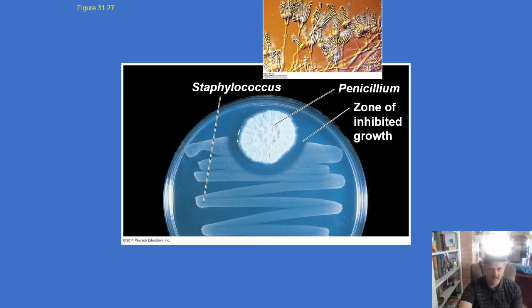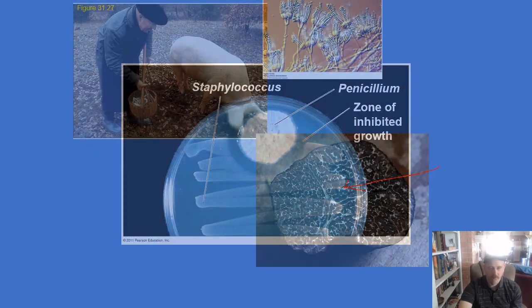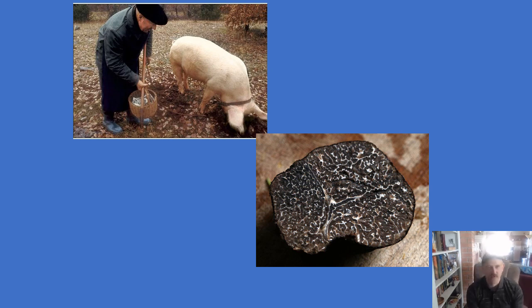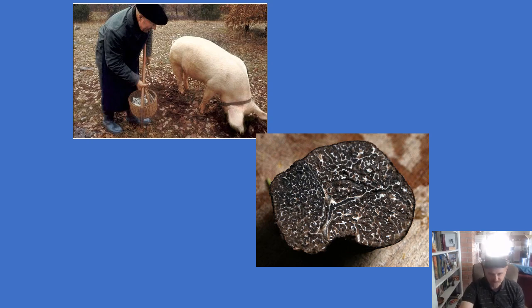Here's penicillin — we have a bacteria growing here, and penicillin is preventing that bacterium from spreading. Of course, we also eat mushrooms directly, like truffles. The mushrooms we eat are actually a reproductive structure of the fungus.